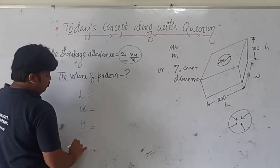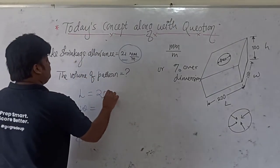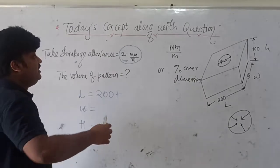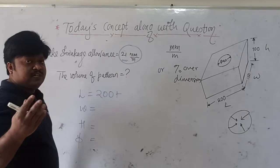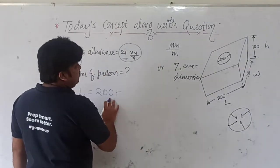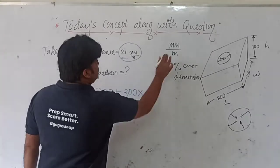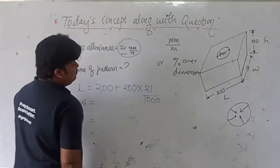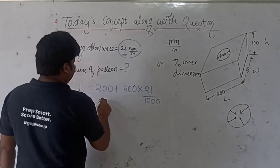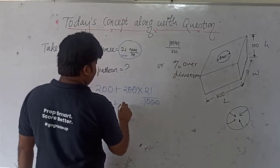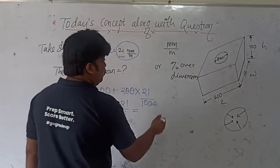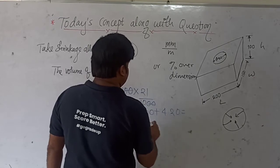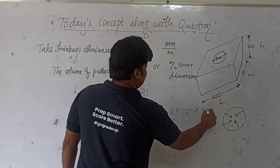For the length: 200 mm plus the shrinkage allowance. The shrinkage allowance of 21 mm per meter means 21 divided by 1000 per mm. So it is 200 plus (200 × 21 / 1000), which equals 200 plus 4.20, giving a pattern length of 204.2 mm. This shrinkage allowance of 21 mm per meter is typical for steel or white cast iron.